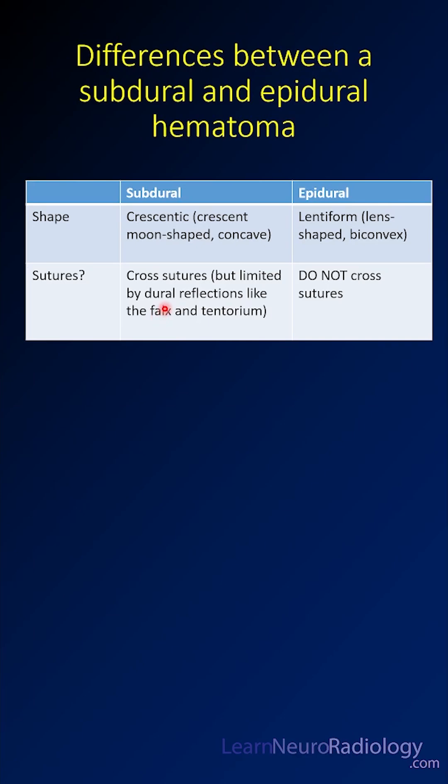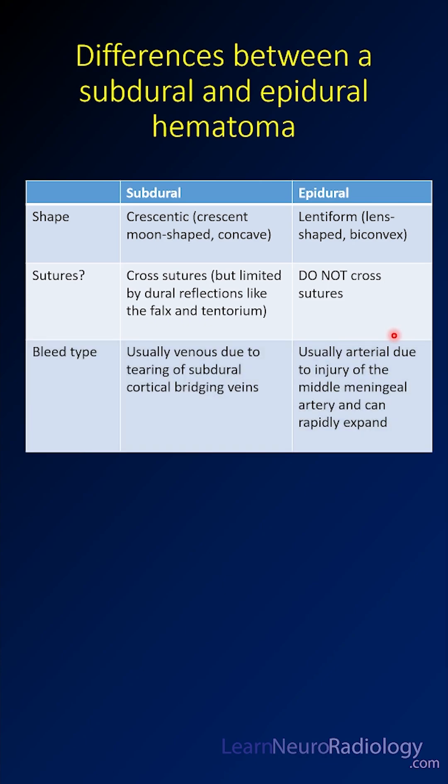Subdural hematomas cross sutures and go around dural reflections like the falx and tentorium. Epidural hematomas do not cross sutures.